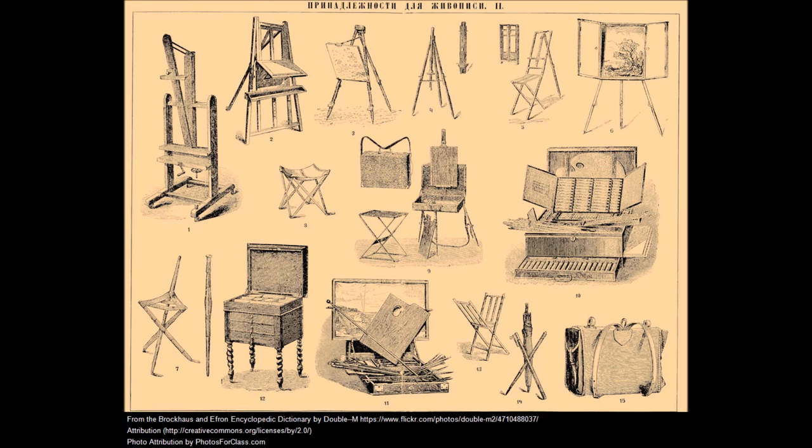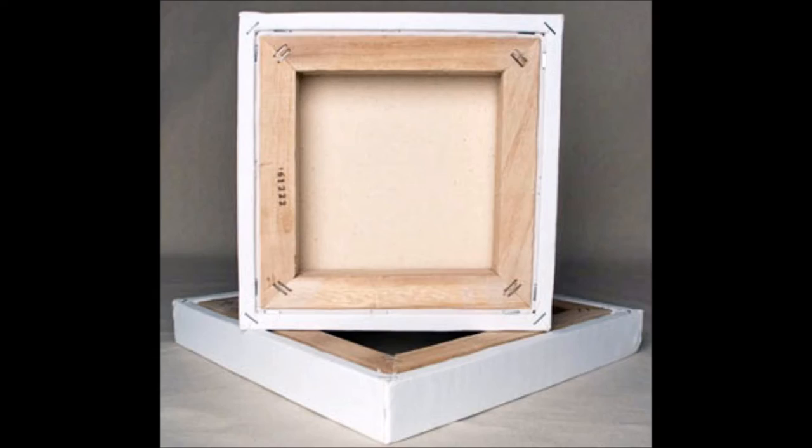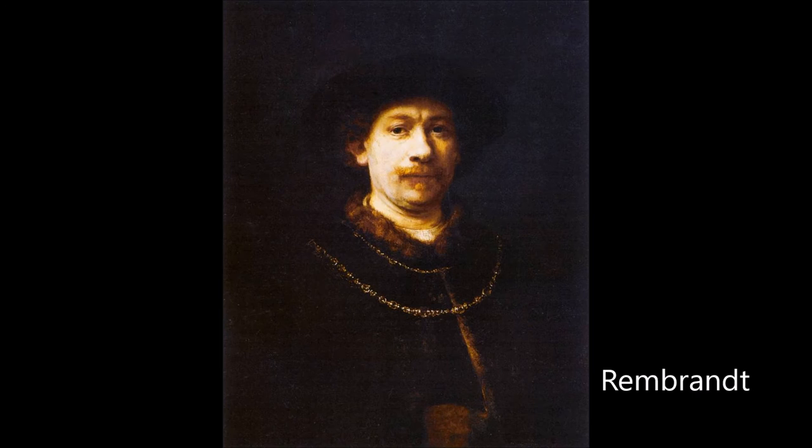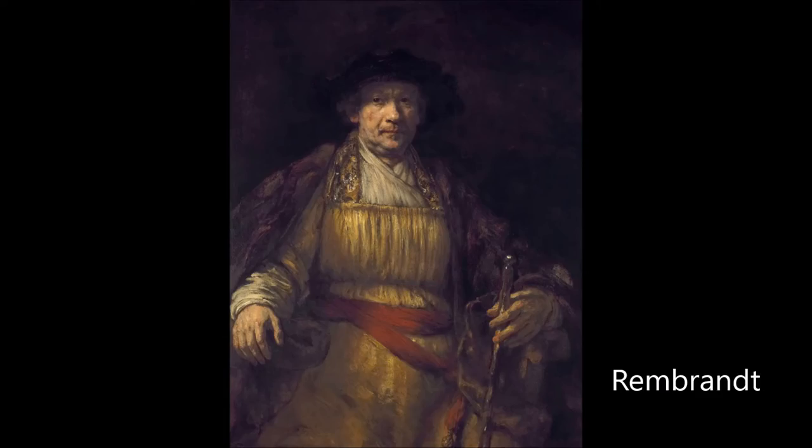It is also in this period that easels, canvas, and oil painting became more easily available. Artists could master the colours and were less restricted by the heavy wood panels they used to paint on. Some artists became major self-portraitists, like Rembrandt, who executed more than 40 self-representations throughout his career.